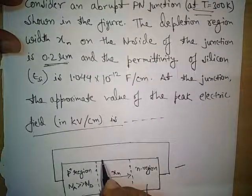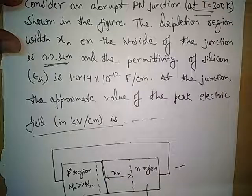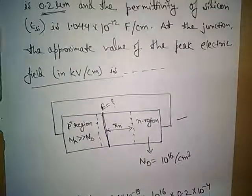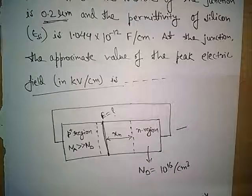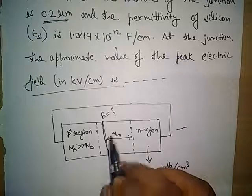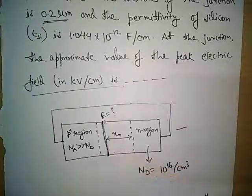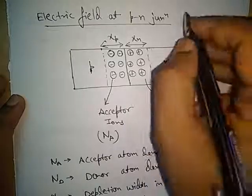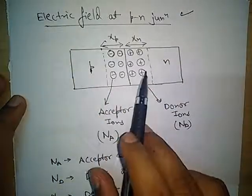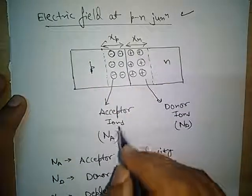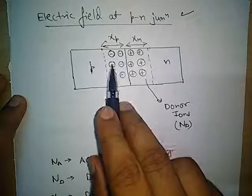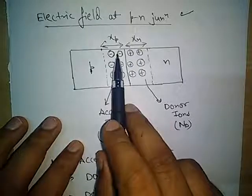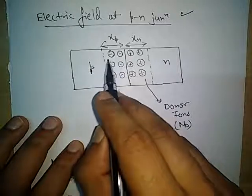We have to determine the value of electric field at this junction. Before starting to solve this question, we will learn how the junction is being formed and how we can calculate the electric field here. Starting with the very basic concept of electric field at the p-n junction — here I have formed a simple p-n junction. This is a p-region, so there will be acceptor atoms in this region. At the junction, there is a recombination of holes from this side and electrons from this side, so there will be ions formed at the junction.